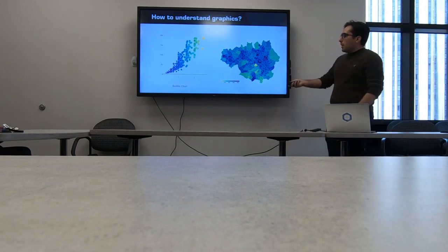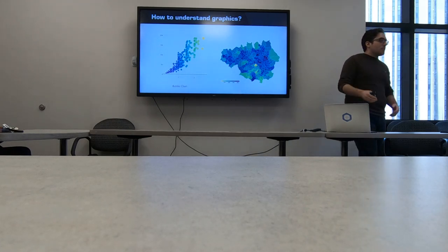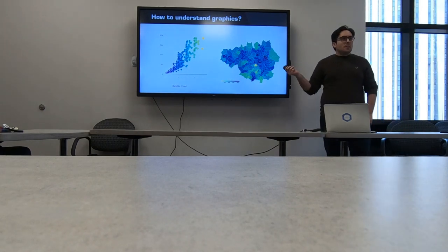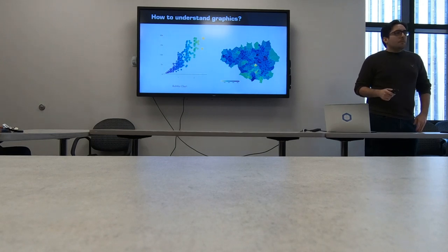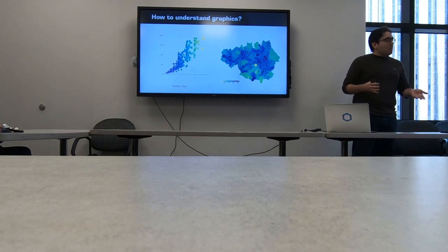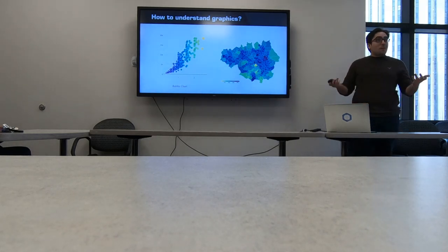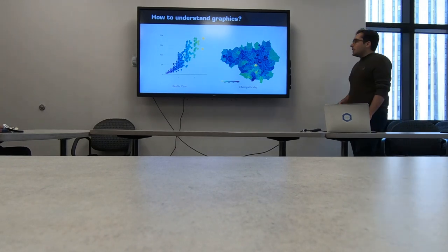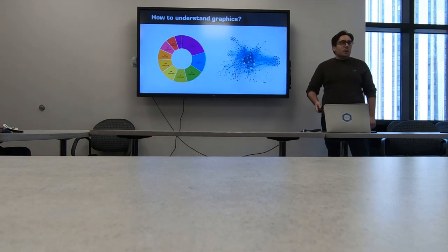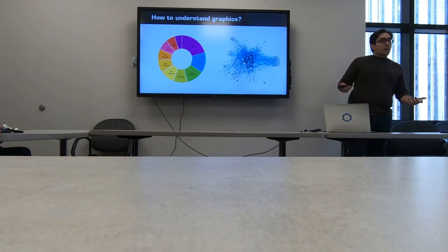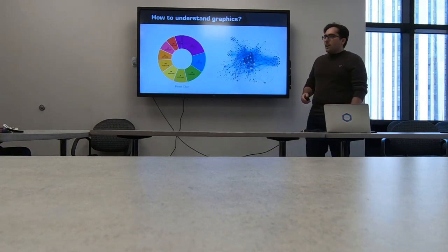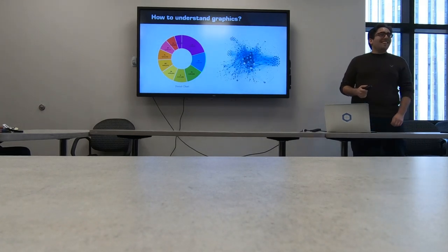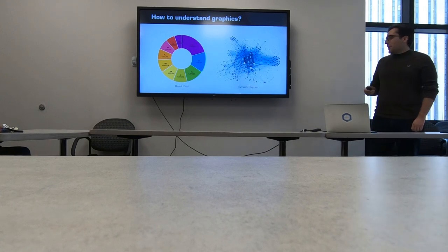Some kind of scatter plot — sometimes these are called bubble charts, especially if they vary by size. How about this one? It's kind of like a heat map applied to geographic data, and it gets a special name: a choropleth map. There are different types of graphs you can do with maps. And here, it looks like a pie chart where you take a bite out of the center — that's often called a donut chart. And then there's a network diagram.